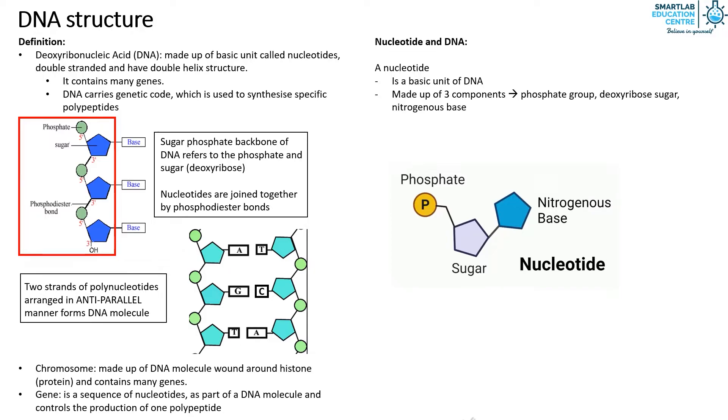The phosphate group, represented by a circle and P in the diagram. The deoxyribose sugar, represented by the purple pentagon in the diagram. And the nitrogenous base, represented by the blue pentagon in the diagram.